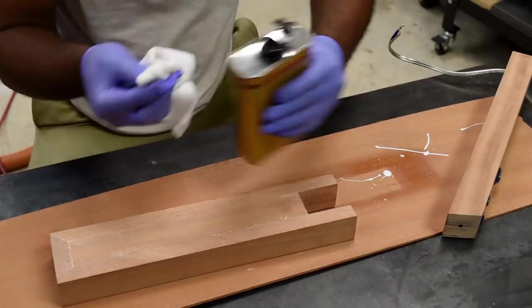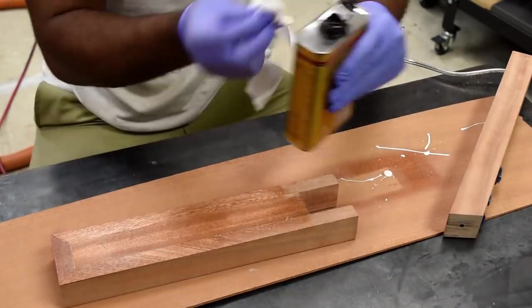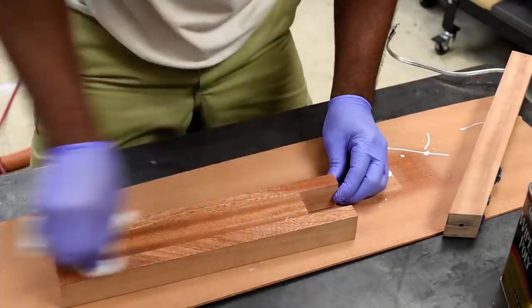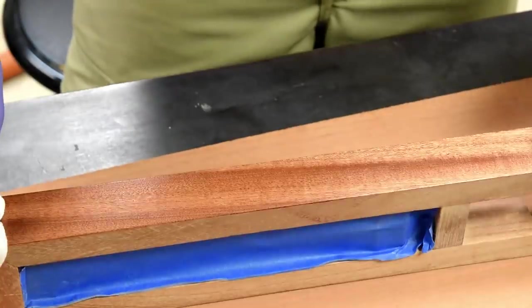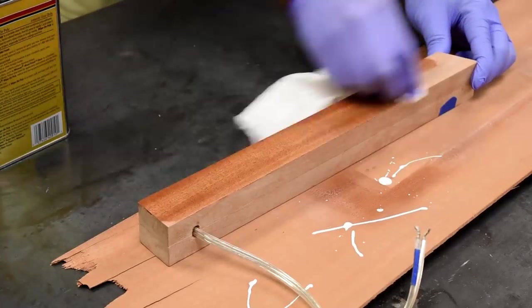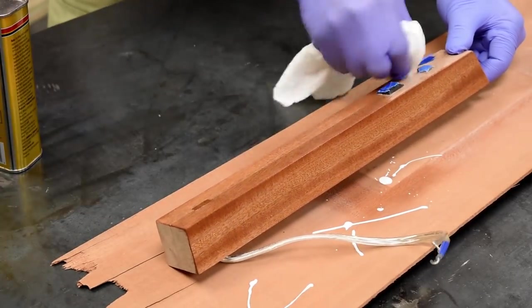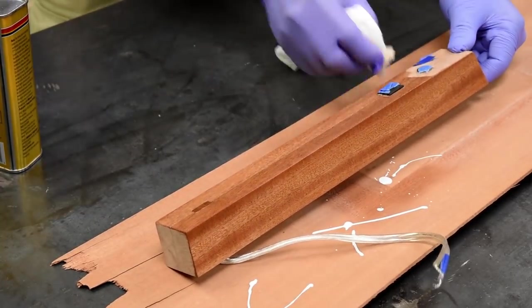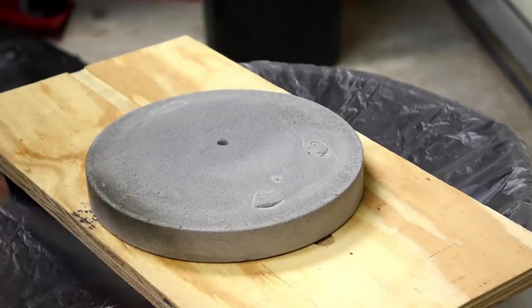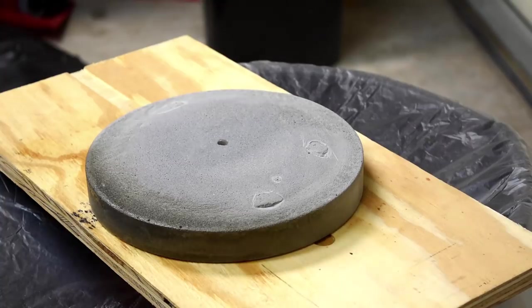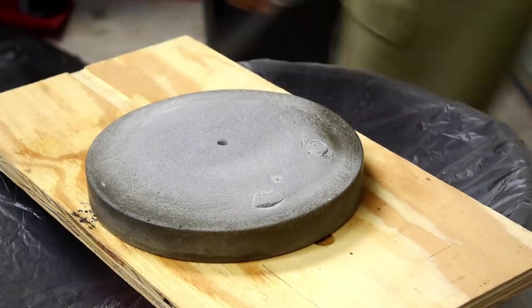My choice of finish is a clear coat polyurethane satin finish. For those who don't know, this is a wipe-on polyurethane. You can actually get it in this can and you can use a rag to apply it versus using a spray or using a brush. To put a finish on the concrete I'm going to use some spray lacquer that I had and just apply two coats of that and that should be it for the concrete base.